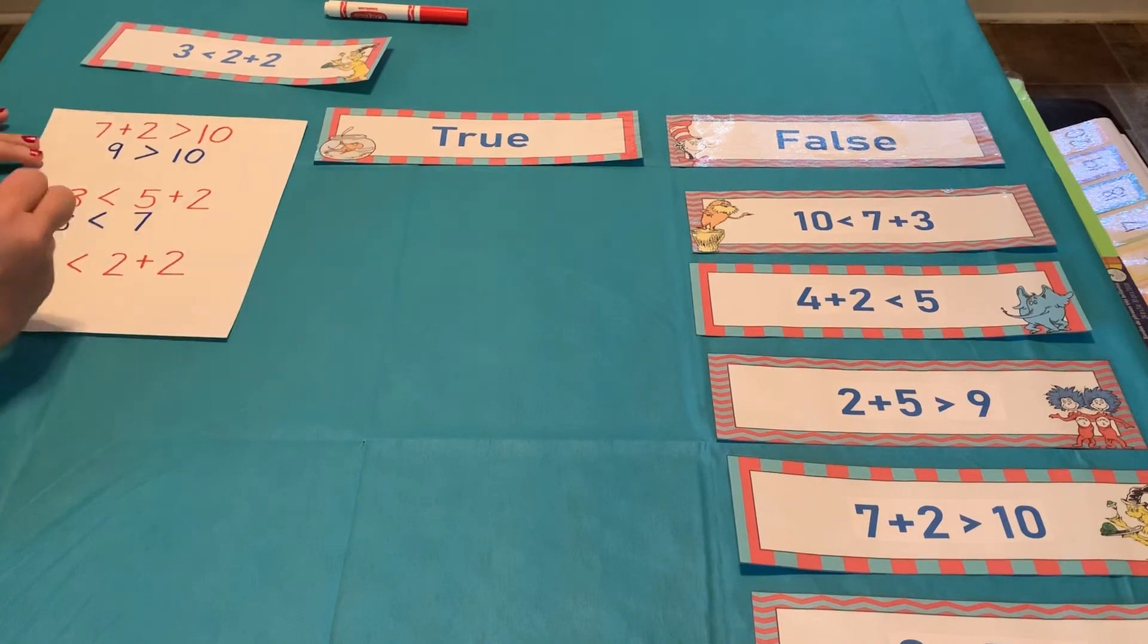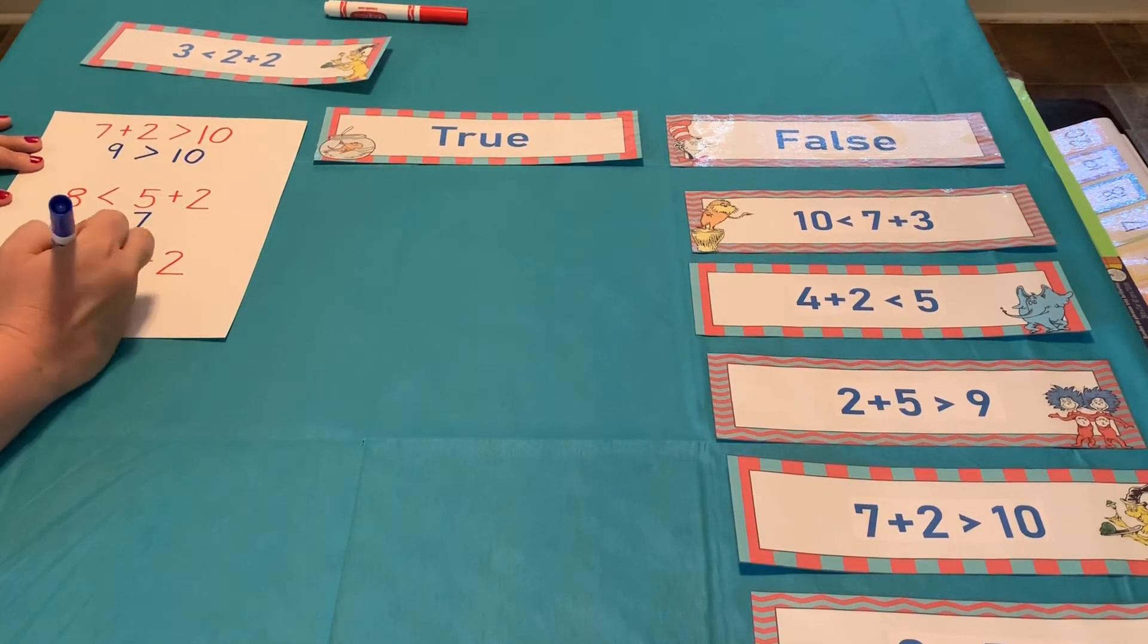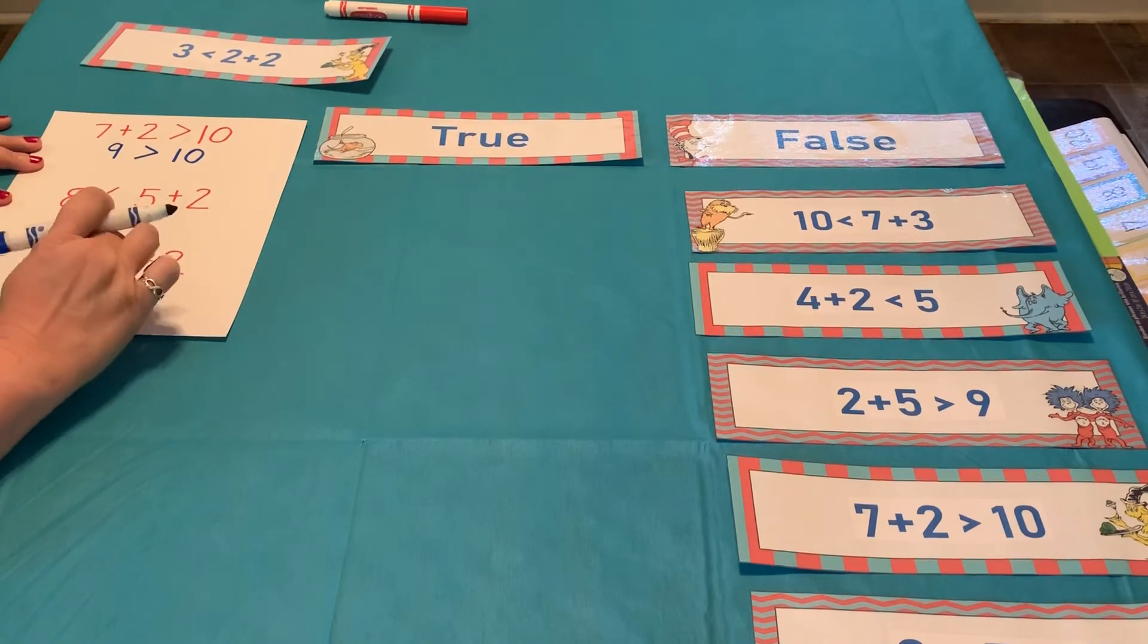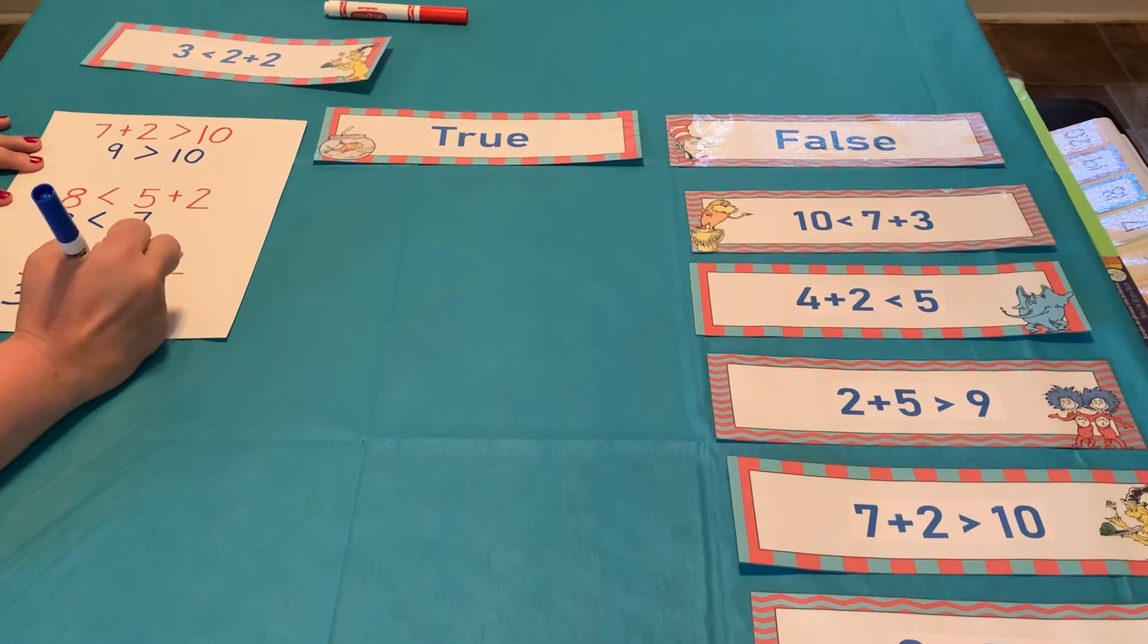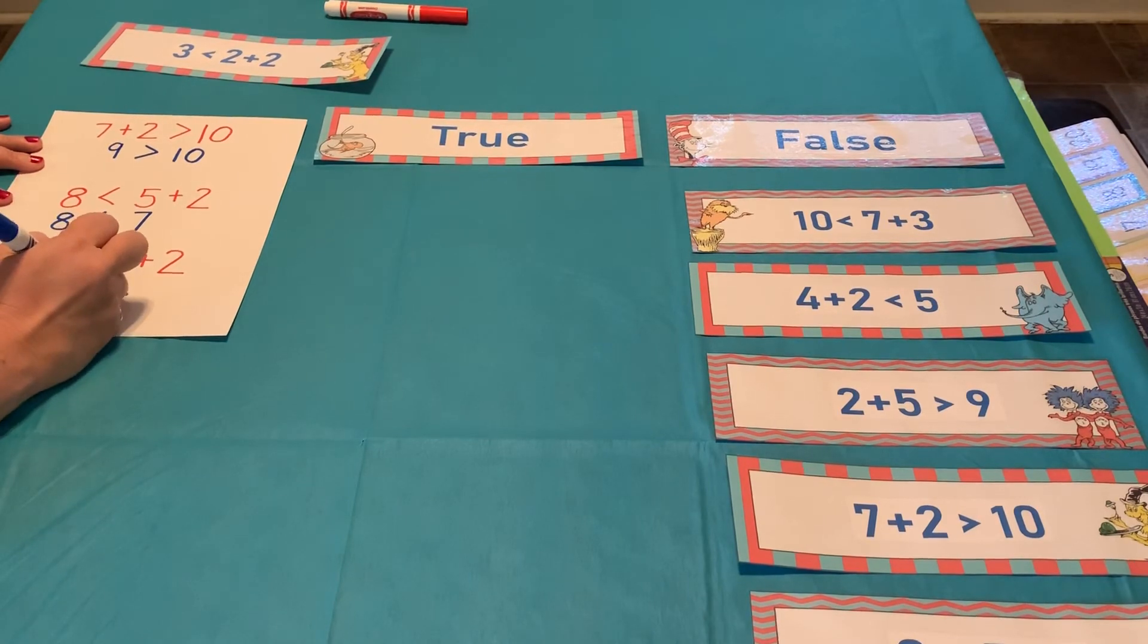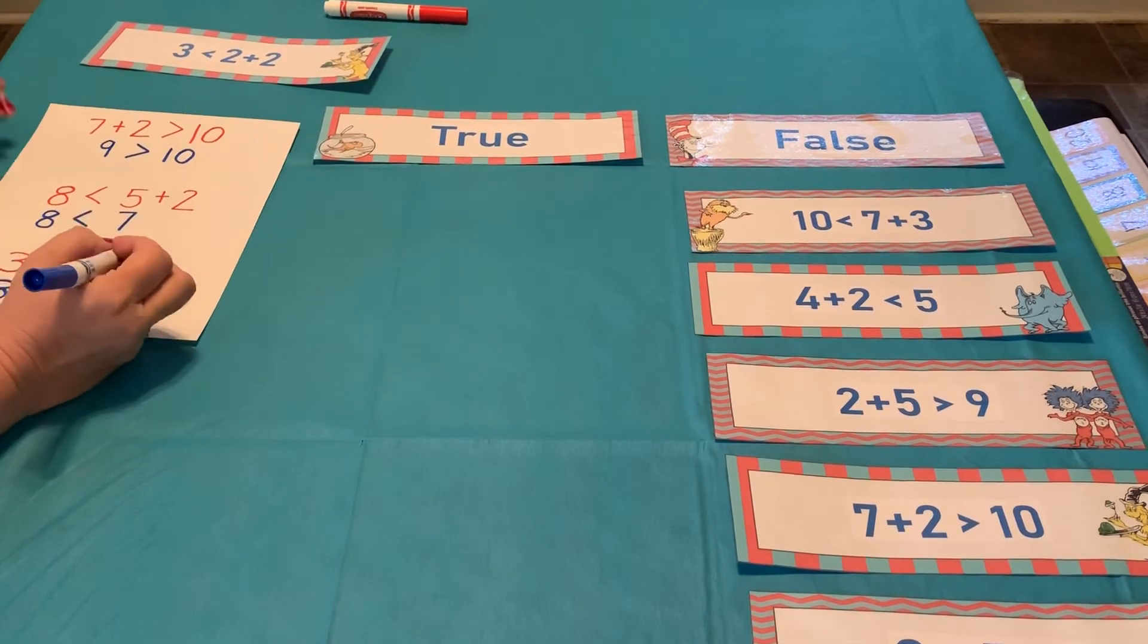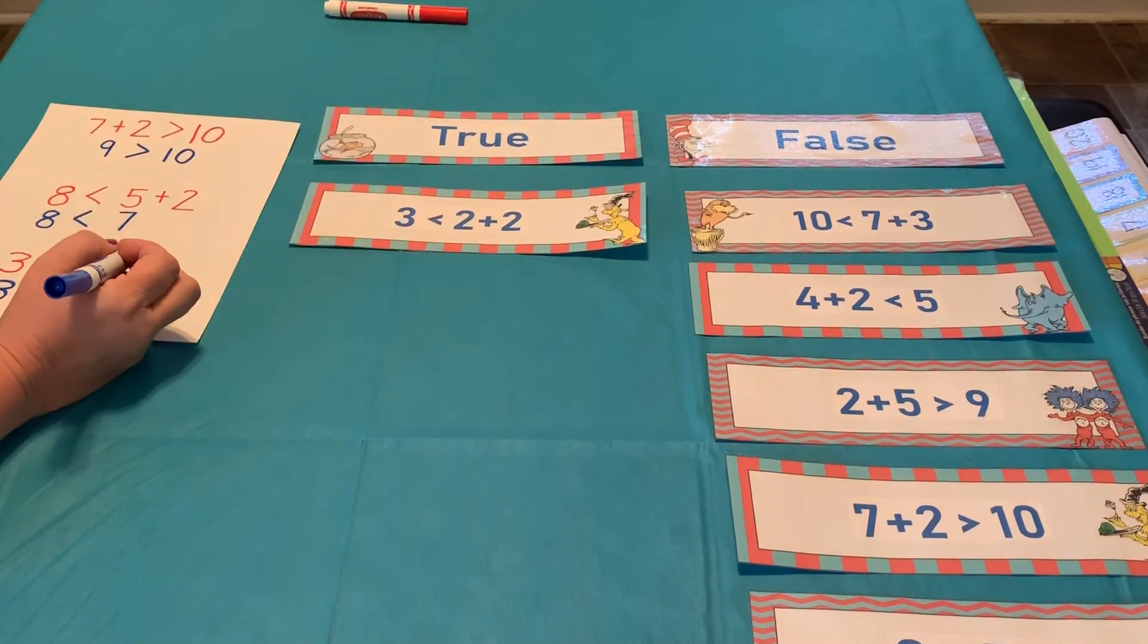All right. We have one more, scholars. All right. 3. 3 is less than 2 plus 2. I know 2 plus 2 is one of my doubles. That's 4. 3 is less than 4. Is that alligator eating the biggest number? Oh, yes, he is. Finally, that statement is true. 3 is less than 2 plus 2.